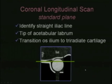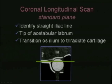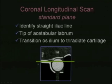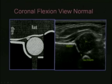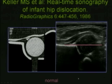The longitudinal coronal scan must be done in the standard plane. To confirm we are scanning in the right plane, we must identify the straight part of the iliac bone and draw a line parallel with the ground. We should see the tip of the acetabular labrum and the transition of the iliac bone to the triradiate cartilage. When we draw a line along the iliac bone, at least 50% of the head should be below that line — seen within the bony socket, which is within normal limits.